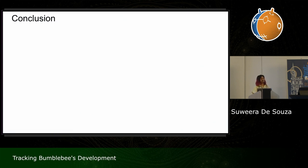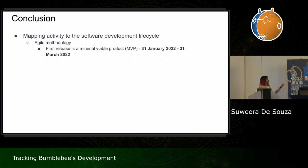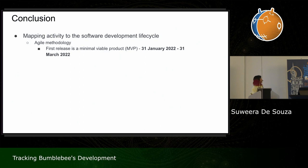Now for our conclusion. From all these timelines, we can map activity to what Bumblebee's software development lifecycle looks like. They clearly have an agile methodology — at the very beginning, Bumblebee was being tested with a very simple build. In agile terms you'd call that an MVP, a minimal viable product. In fact, in forums where malware authors promote their loaders, they often say 'beta version' or 'this is my MVP loader' — it's almost like startup culture, like getting funding for their project.